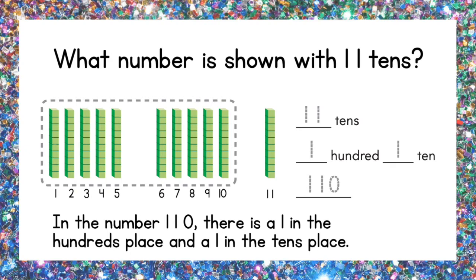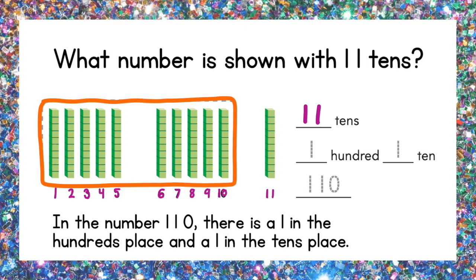The first thing we need to do is count the tens: 1 through 11. There are eleven tens. Next we need to circle the group of 10. We have one hundred and one ten — that makes one hundred ten. In the number one hundred ten, there is a one in the hundreds place and a one in the tens place.